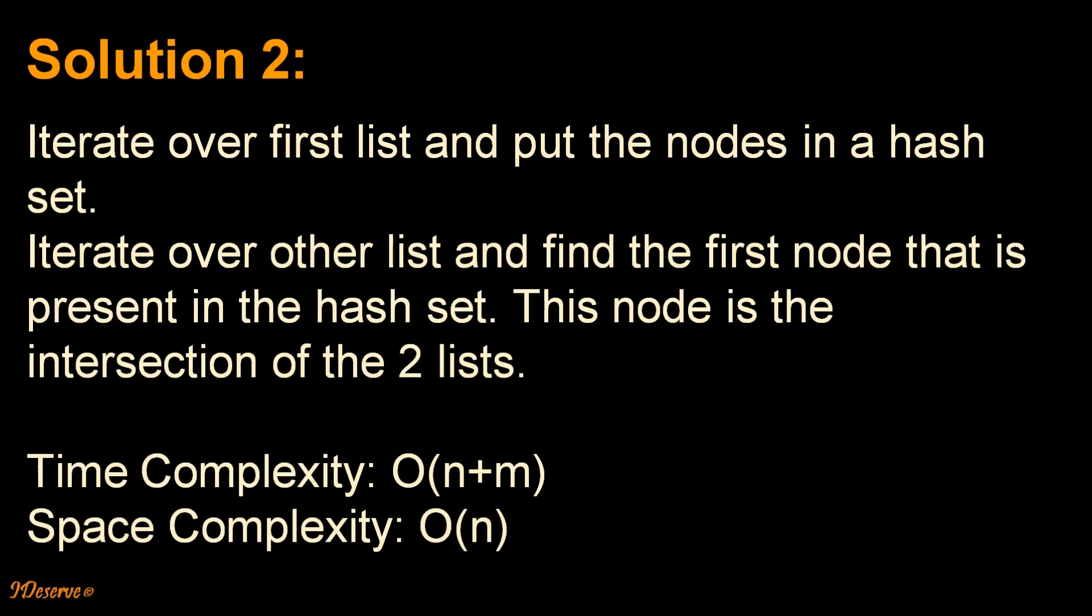Here the time complexity would be O(n+m), where n is the size of first list and m is the size of second list, and the space complexity is O(n) which is the size of hash set.